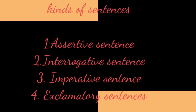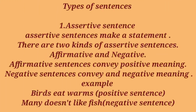Let us start with the first type — the assertive sentence. An assertive sentence makes a statement. There are two kinds of assertive sentences: affirmative and negative. An affirmative sentence conveys a positive meaning.